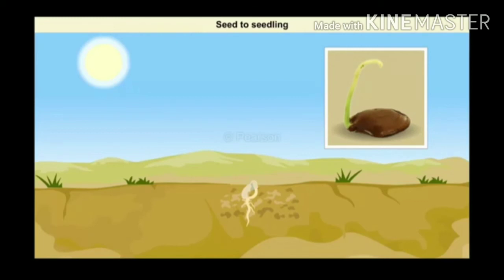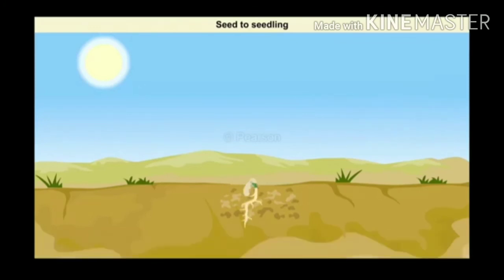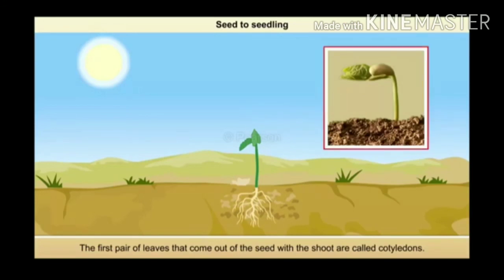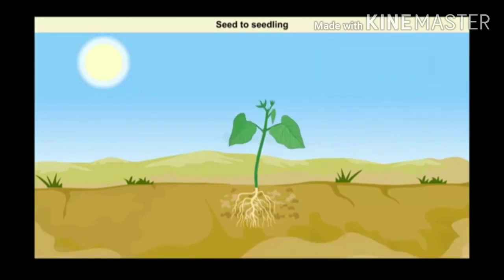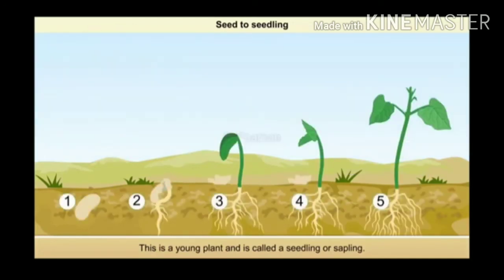The root fixes the baby plant to the soil and helps absorb water and nutrients from the soil. Then the shoot comes out of the seed and starts to grow towards the sun. The first pair of leaves that come out with the shoot are called cotyledons. The root grows longer, the shoot becomes green and sprouts more leaves. This young plant is called a seedling or sapling. For all these stages of germination, essential conditions or factors are required.